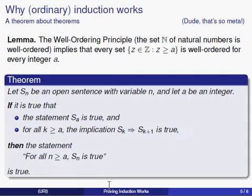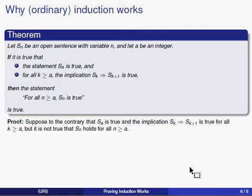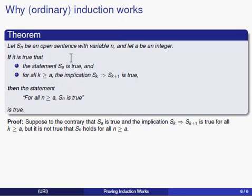So how do we prove this if-then statement—that if you do the induction outline, you will really have proved the statement you claim to prove? We're going to prove this theorem using a proof by contradiction. Because this is an if-then proof, we start by assuming the hypothesis is true—we suppose the statements going into an induction proof are true—yet also assume the conclusion is false.